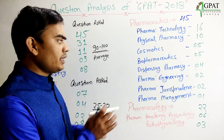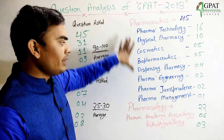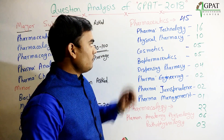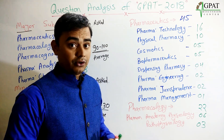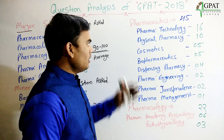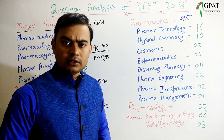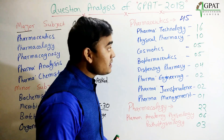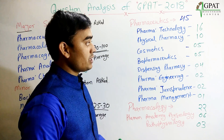I have distributed the question numbers from pharmaceutics topic-wise. Firstly, pharmaceutical technology — commonly known as pharmatech — is very important. In pharmatech, we study capsules and all dosage forms. From pharmaceutical technology, 16 questions were asked — very important.